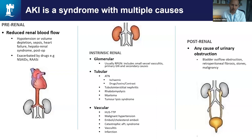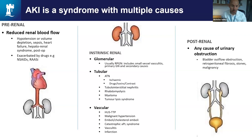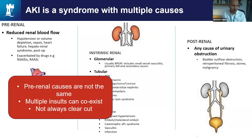Traditionally, we've been taught to approach this heterogeneity of AKI by determining the cause clinically — thinking about pre- and post-renal factors versus intrinsic renal diseases. The vast majority of AKI cases fall in that left-hand column, with around 80% due to one or more pre-renal factors. However, it's important to critique this approach: these pre-renal causes are clearly not the same, multiple insults can co-exist, and it's not always a clear-cut decision as to the cause of AKI.